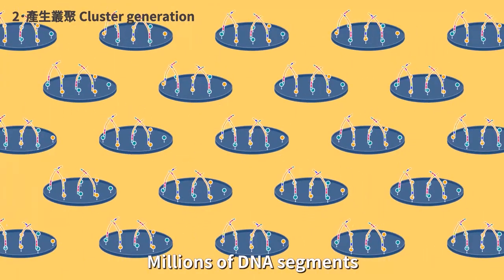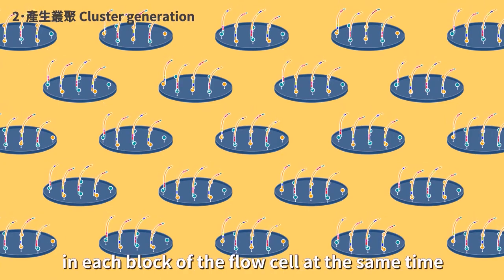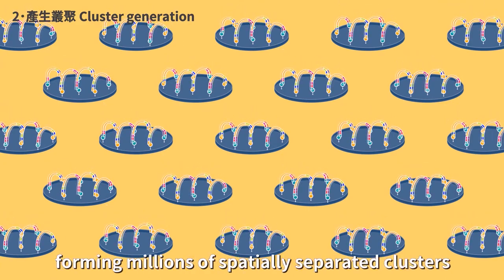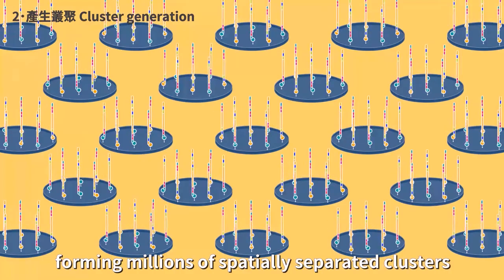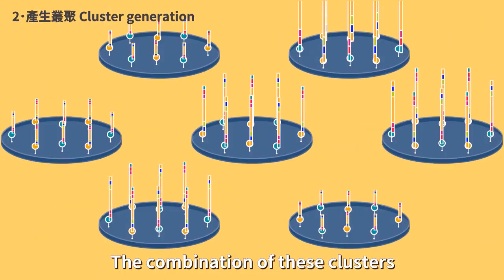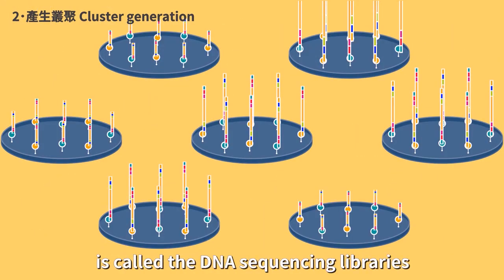Millions of DNA segments are undergoing amplification in each block of the flow cell at the same time, forming millions of spatially separated clusters. The combination of these clusters is called the DNA sequencing libraries.